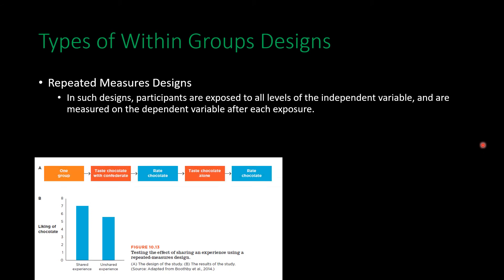The two primary types of within groups designs: a repeated measures design — the most common — has only one group. They are first given one manipulation, then rate on the dependent variable, then given a second manipulation, and rate again. For example, researchers wanted to know whether eating chocolate with someone versus alone would change how much participants liked that chocolate. Participants ate a piece of chocolate with a confederate, rated how good it was, then ate chocolate by themselves and rated it again. The experimenters told participants the two chocolates were different, when in fact they were the same.